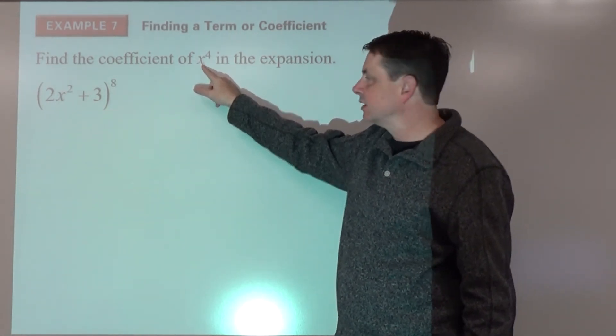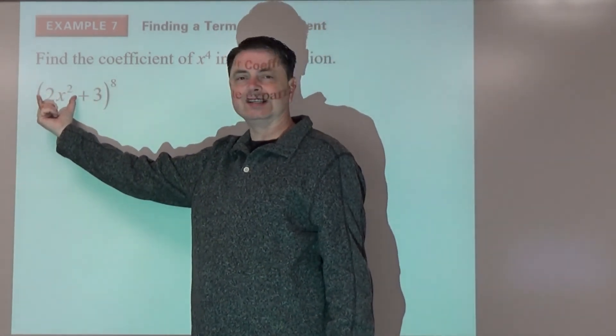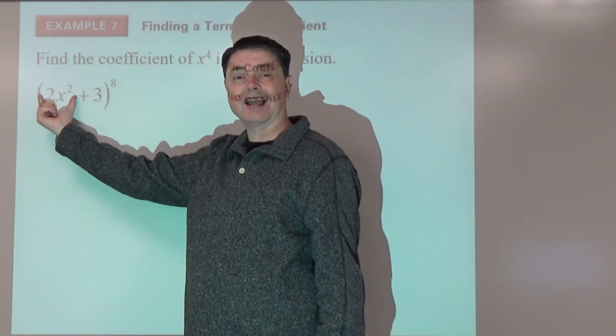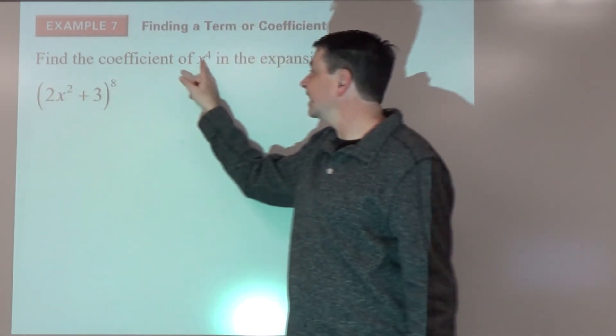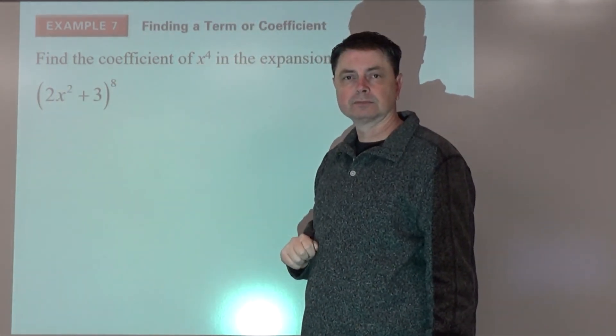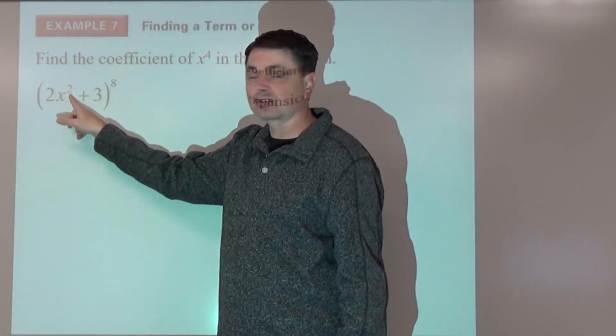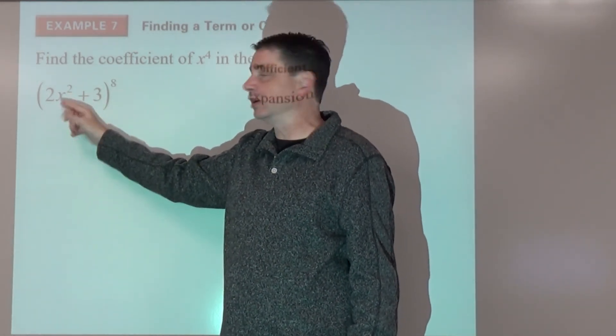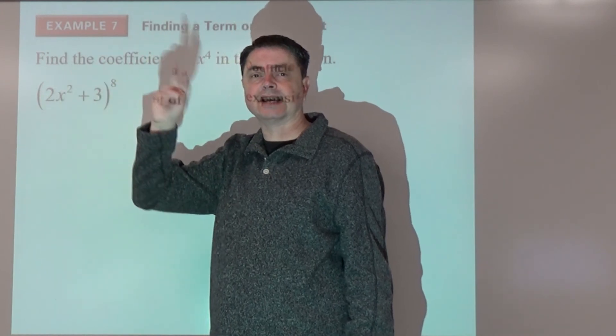So the question is, what would we raise this to, our a part, to get x to the fourth? Since this is already x squared, clearly that would be, we would raise a to the second power.